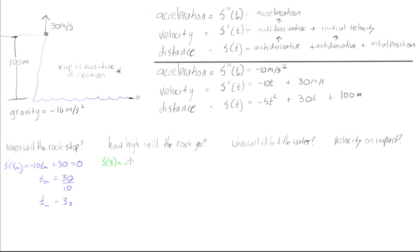So we'll say s at 3 is going to be equal to negative 5 at 3 squared plus 30 times 3 plus 100. Okay, so s at 3 is going to be equal to negative 5 times 9 is negative 45. 30 times 3 is 90, so this will be plus 190. And we'll find out that s at 3 is going to be equal to 145. And this is 145 meters.